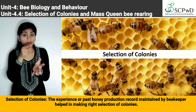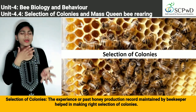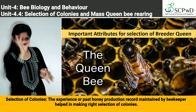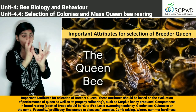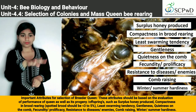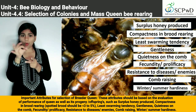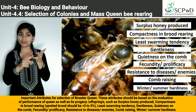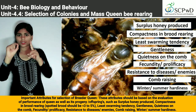Selection of Colonies. The experience or past honey production record maintained by the beekeeper helps in making the right selection of colonies. These attributes should be based on the evaluation of performance of the queen as well as its progeny offspring, such as surplus honey produced and compactness in brood rearing — spotted brood should be less than 3–5%.